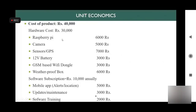Regarding unit economics, the hardware cost of the trap is 30,000, which includes the Raspberry Pi, camera, sensors, battery, GSM module, and weatherproof box. The software subscription is 10,000 annually. The overall cost of production is 40,000.